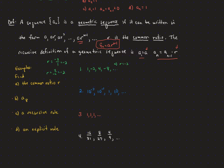The explicit rule for this geometric sequence is a sub n equals 1 times negative 2 to the n minus 1. To find the eighth term, a sub 8 equals 1 times negative 2 to the seventh power. Since a negative raised to an odd power is negative, and 2 to the seventh is 128, we get negative 128. The recursive formula starts at 1 and each next term is the previous term times negative 2.